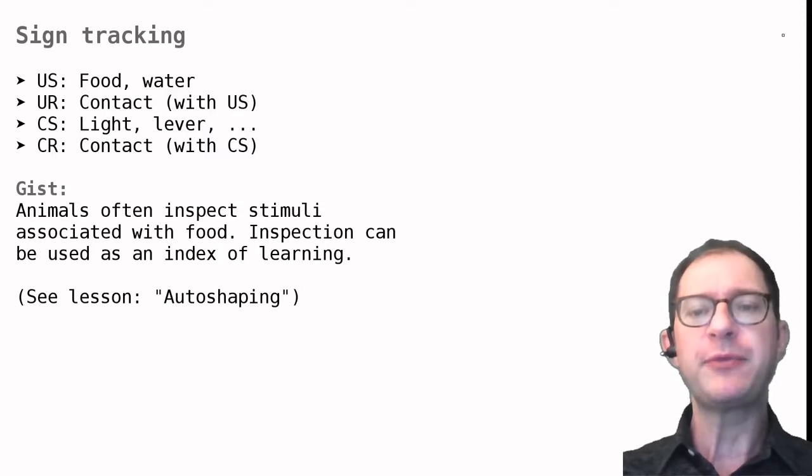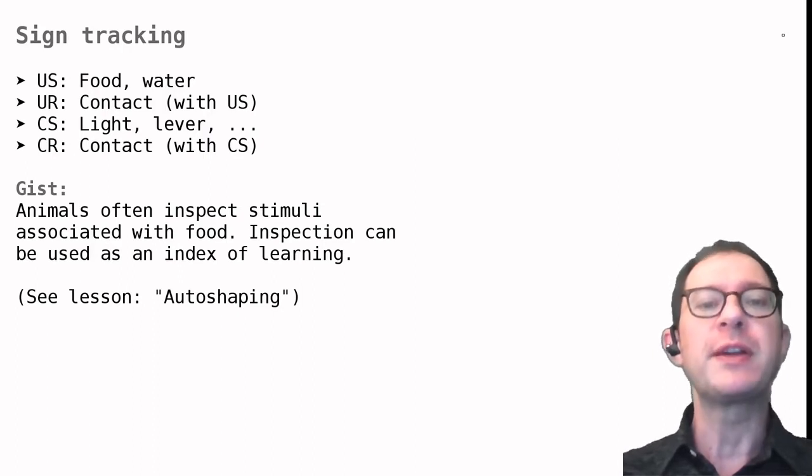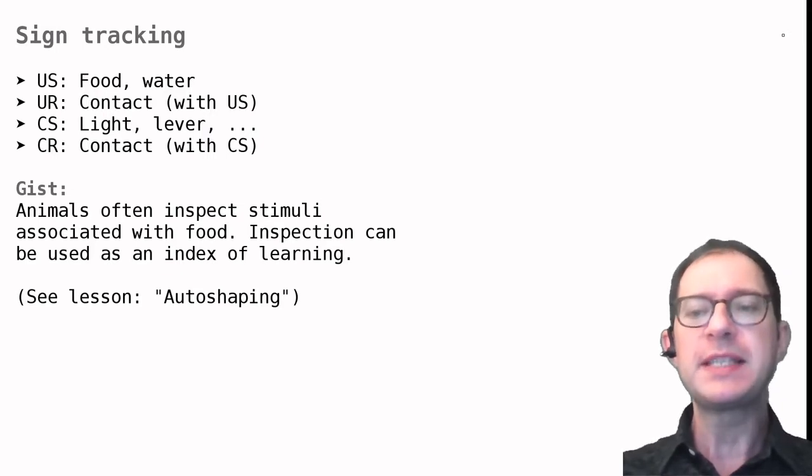Individual animals differ in how much checking of the magazine or the light they do. Animals that do more checking of the magazine are called goal trackers because they seem to be most interested in the food which we assume to be their goal. Animals that do more checking of the light are called sign trackers because they seem most interested in the signs that predict the food. This is not a hard distinction and most animals will do a bit of both.